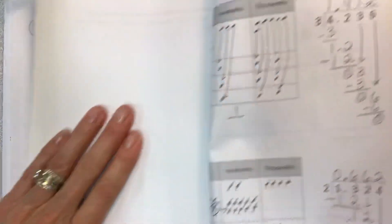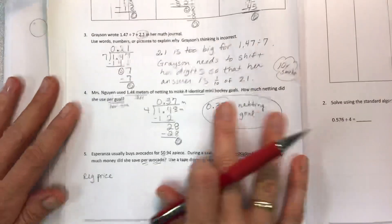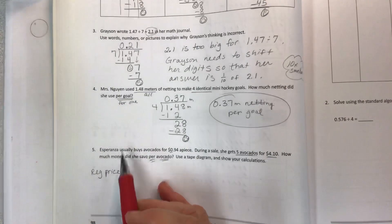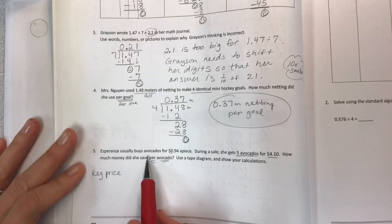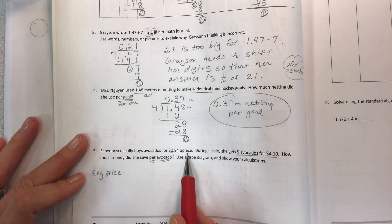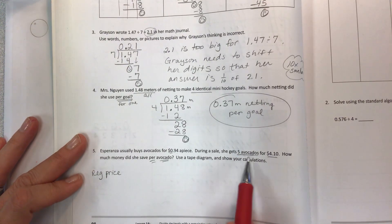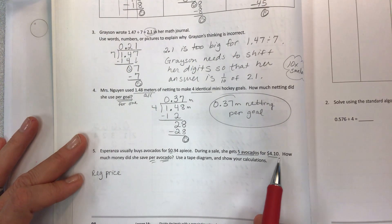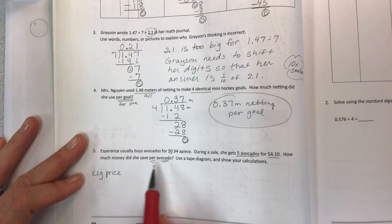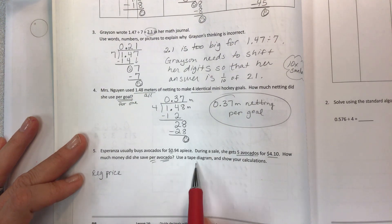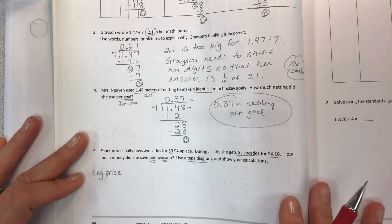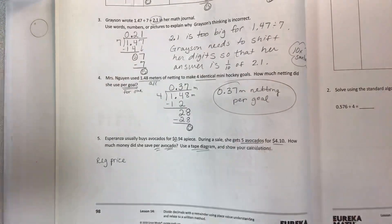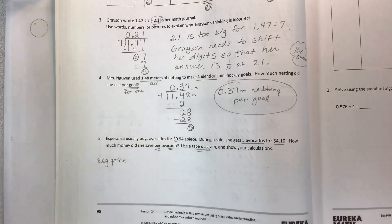Anyway, let's just finish this problem about Esperanza. Esperanza usually buys avocados for 94 cents a piece. During a sale, she gets five avocados for four dollars and ten cents. How much money did she save per avocado? Use the tape diagram and show your calculations.